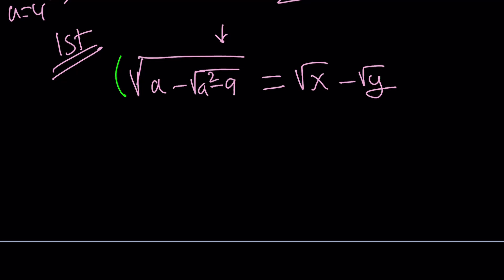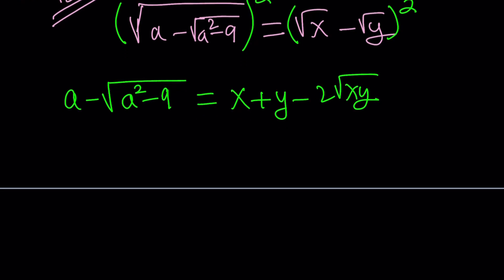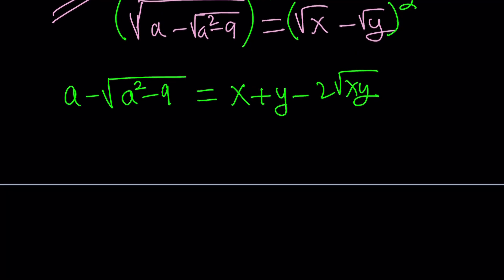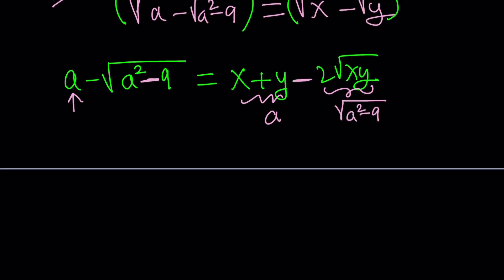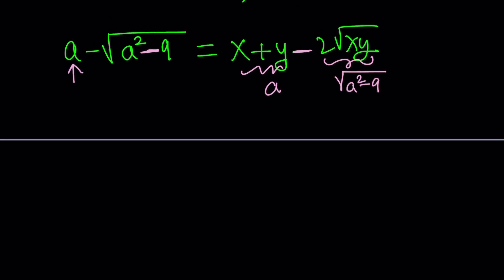How do you simplify this? Square both sides. That's what we do most of the time with radical equations. That gives us a minus the square root of a squared minus nine equals x plus y minus two root xy. I put the x and y together because they kind of make up the rational part, which is this. So x plus y needs to be a.